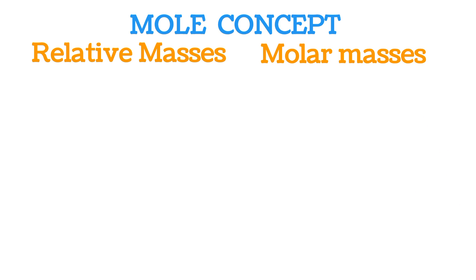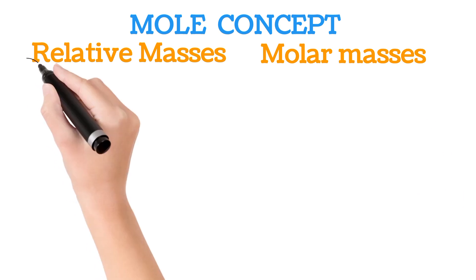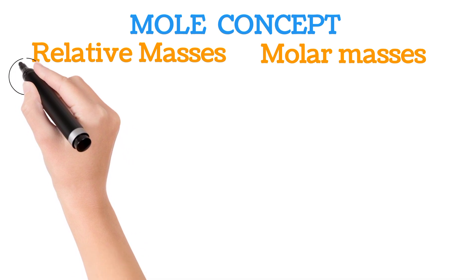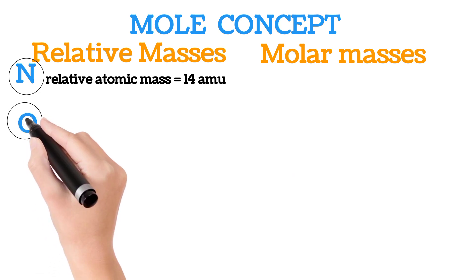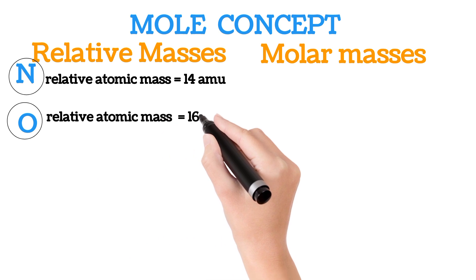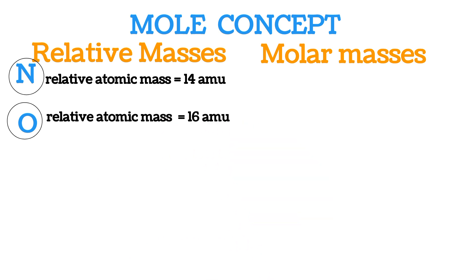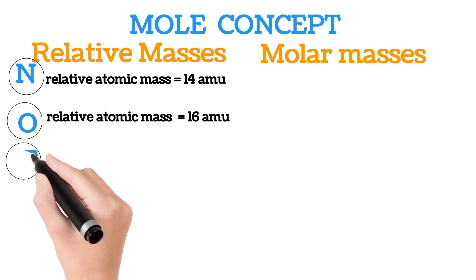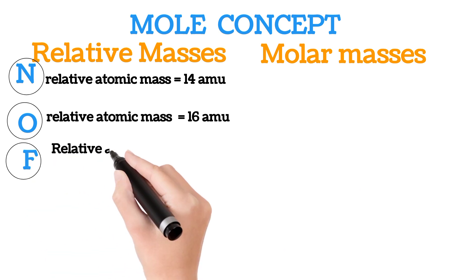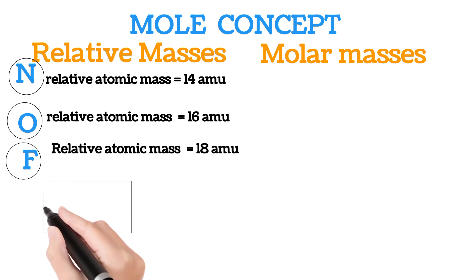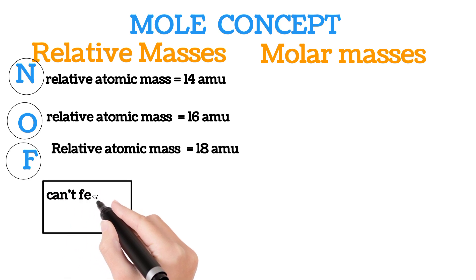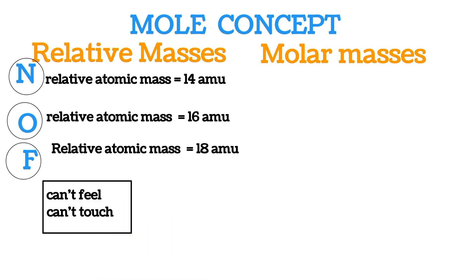Let's consider the single atom of nitrogen. It has a relative atomic mass of 14 atomic mass units, which I'll be calling AMU from this point. An atom of oxygen has a relative atomic mass of 16 AMU. An atom of fluorine has a relative atomic mass of 18 AMU. These single atoms of each of these elements are quite minute — we can neither see them nor weigh them, and hence it's very difficult to use them for studies.